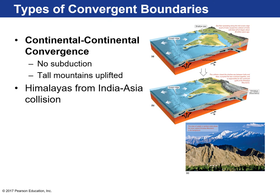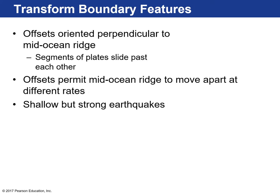Lastly, how mountains form: that's continental-continental convergence. There's no subduction because both plates are too buoyant, and you create really tall mountains. The Himalayas are the best example. India was its own island continent in the Indian Ocean. About 70 million years ago it began moving northward on a collision course with Asia. When it slammed into Asia, it uplifted all the continental rocks in both regions and created the Himalayan Mountains. Some of the rocks at the peak, like on Mount Everest, are limestones — which form in shallow oceans — now pushed up to about 29,000 feet.